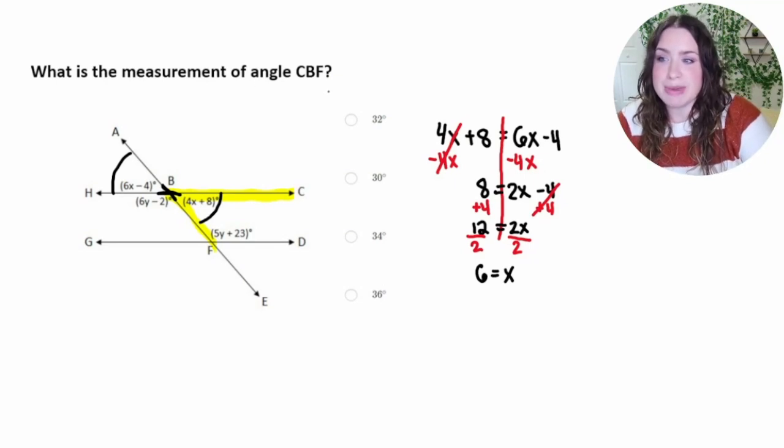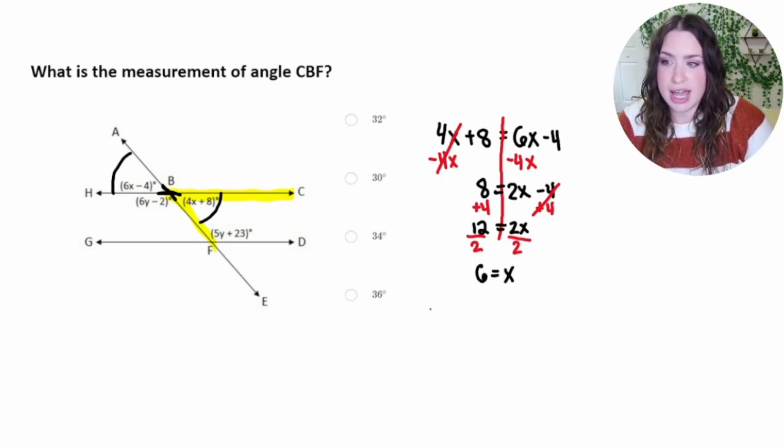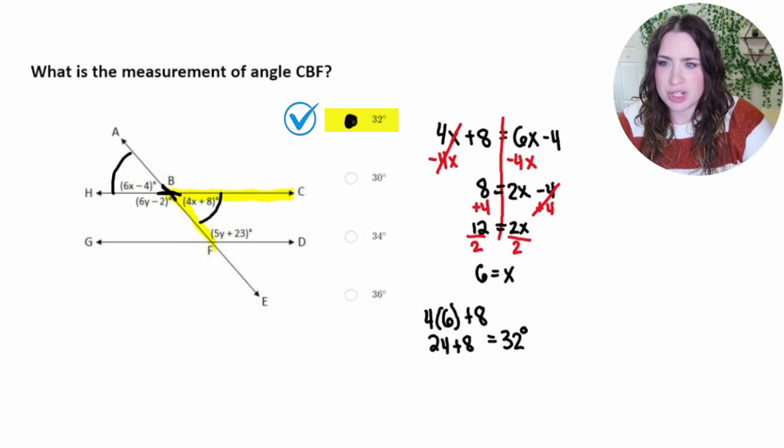We are looking for angle CBF, so we're not done yet. So CBF was given by 4x plus 8, so I'm going to plug in 6 to that. So 4 times 6 plus 8 is going to give me the measure of CBF. So that's 24 plus 8, which is 32 degrees, which we see is this top option there.